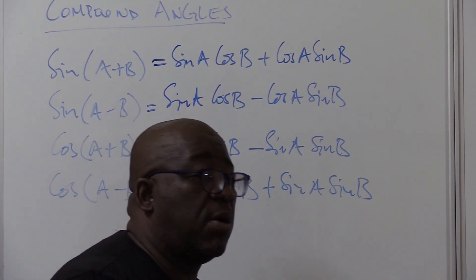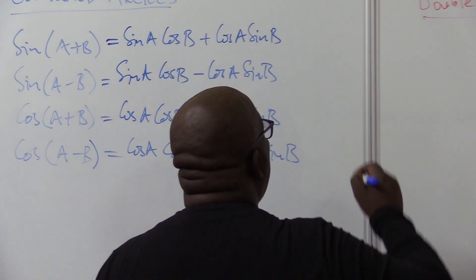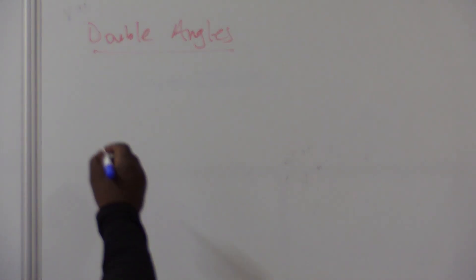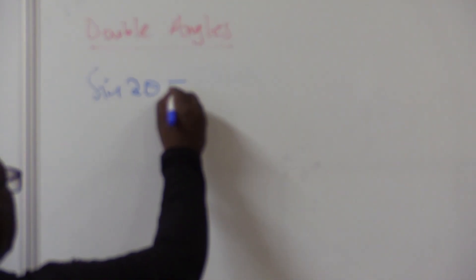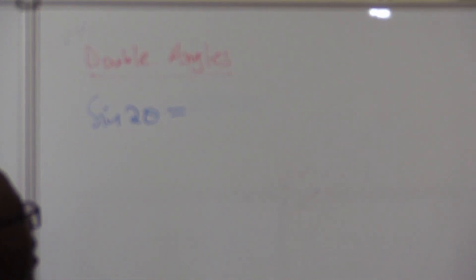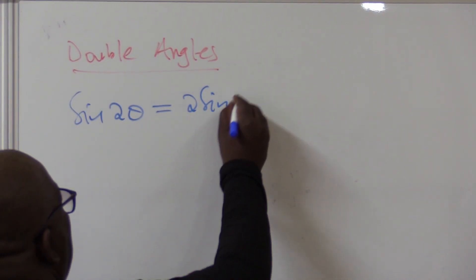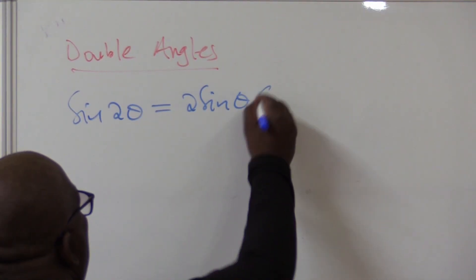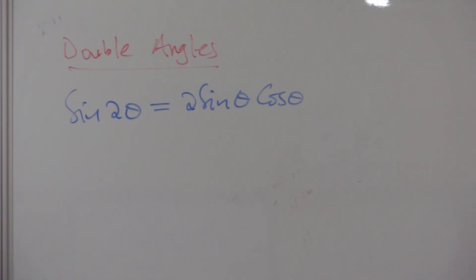I want us to move to double angles. Remember, double means two. If I've got sine of 2-theta, what is this going to be? It will be 2 sine theta cos theta. This is the double angle for sine. And I'll quickly show you where we get this from.